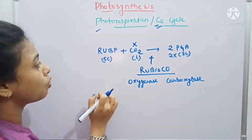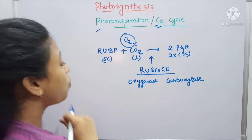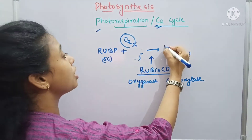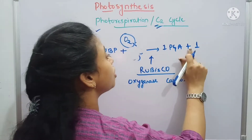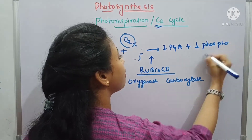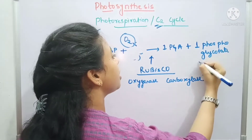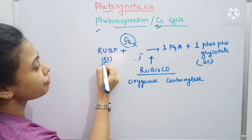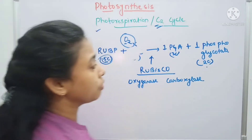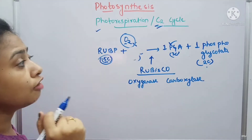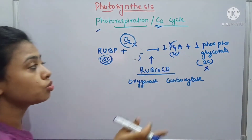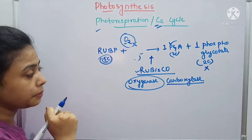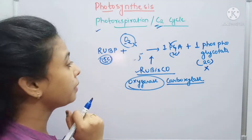If CO2 concentration becomes very low and instead the O2 concentration becomes high, then instead of forming 3-phosphoglyceric acid, O2 will react with RuBP and make one molecule of phosphoglyceric acid and one molecule of phosphoglycolate, which is a two-carbon compound. Because RuBP is five carbons, it divides into a three-carbon and a two-carbon compound. Only one PGA will take part further in glucose formation — the phosphoglycolate has no use. At this point RuBisCO performs only oxygenase activity instead of carboxylase activity.